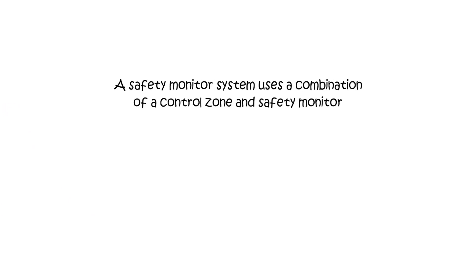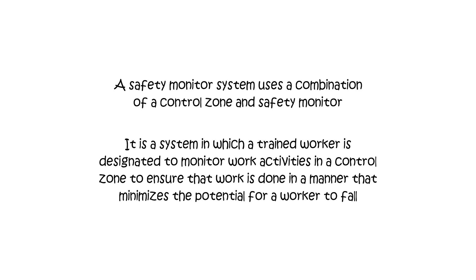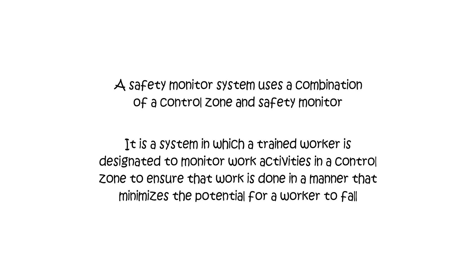A safety monitor system uses a combination of a control zone and safety monitor. It's a system in which a trained worker is designated to monitor work activities in a control zone to ensure that work is done in a manner that minimizes the potential for a worker to fall.